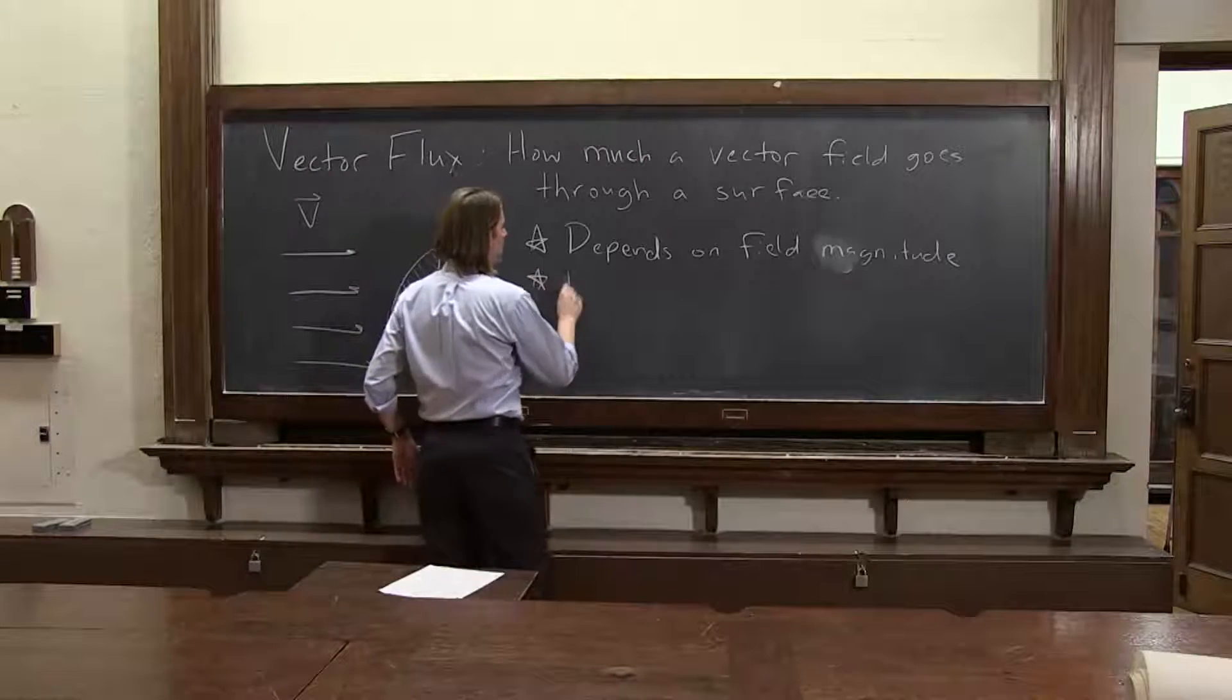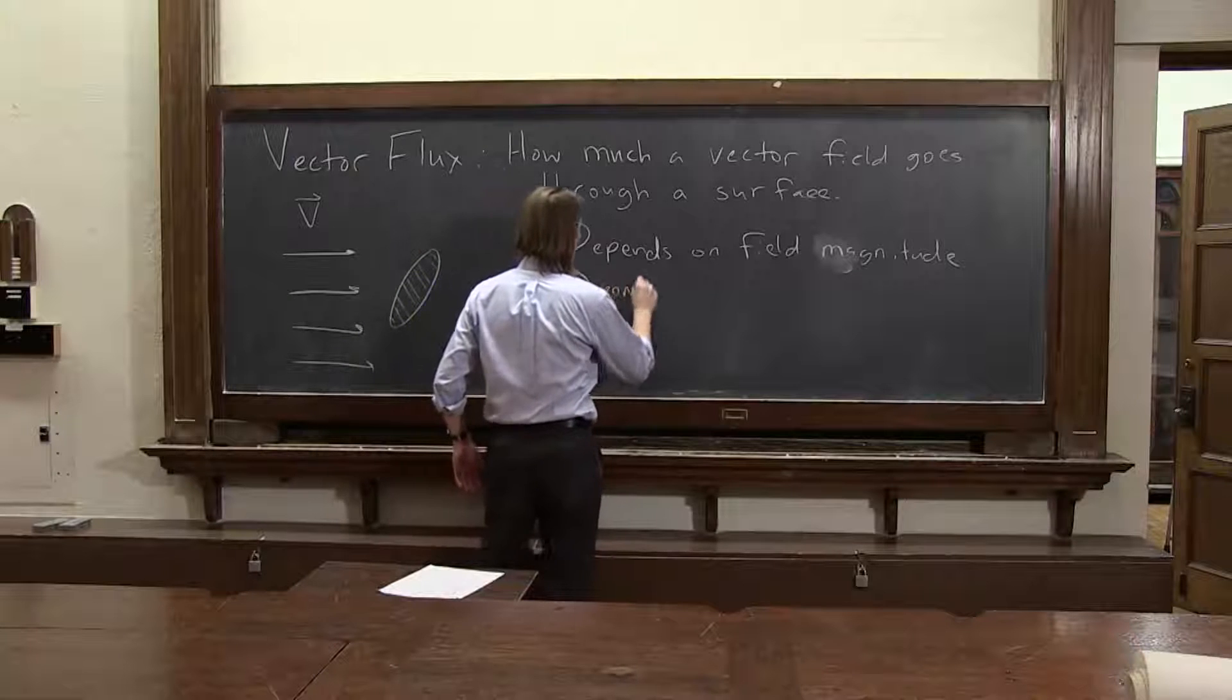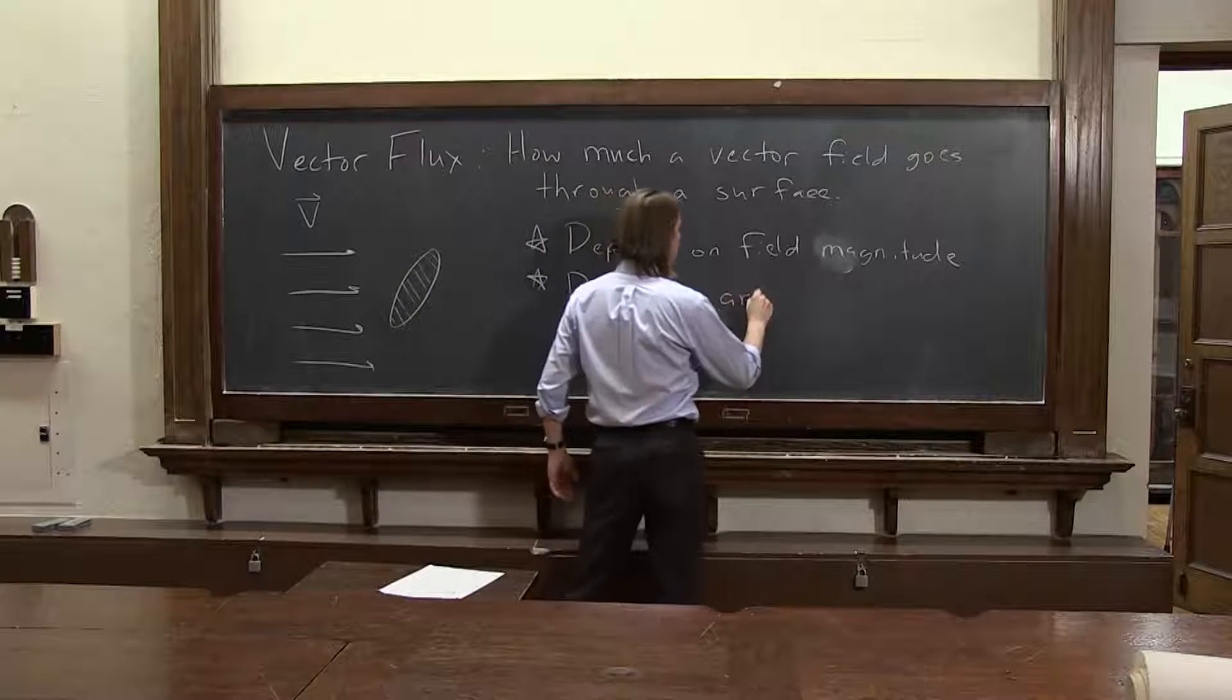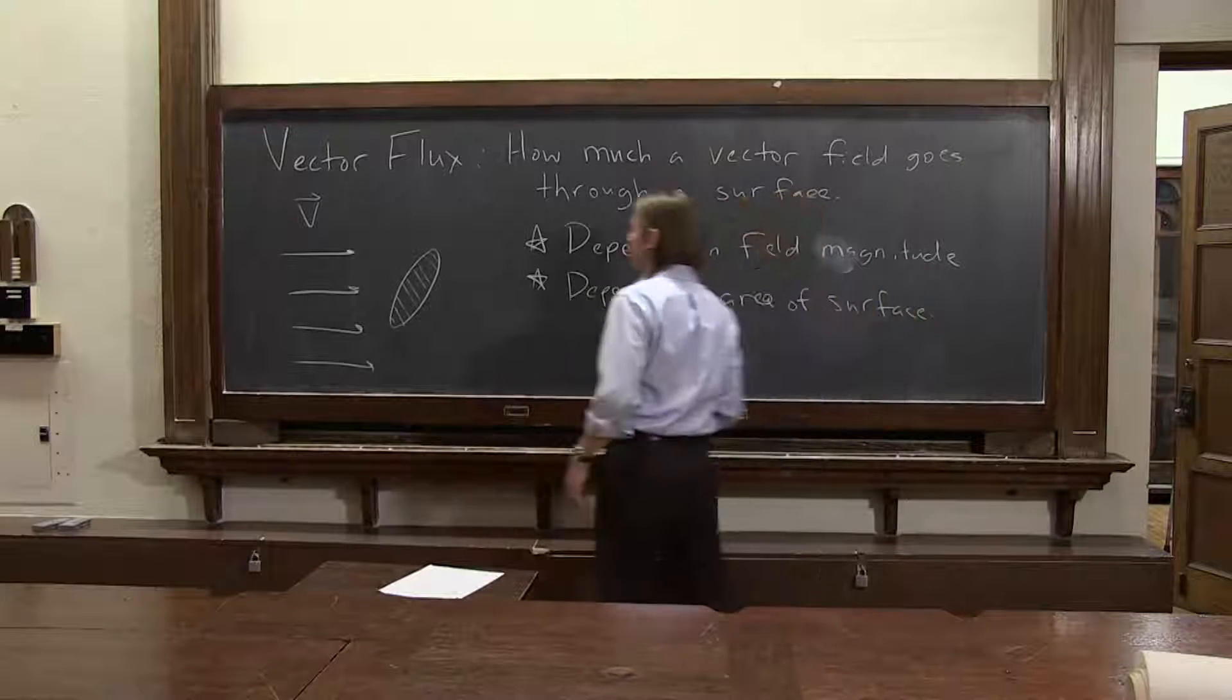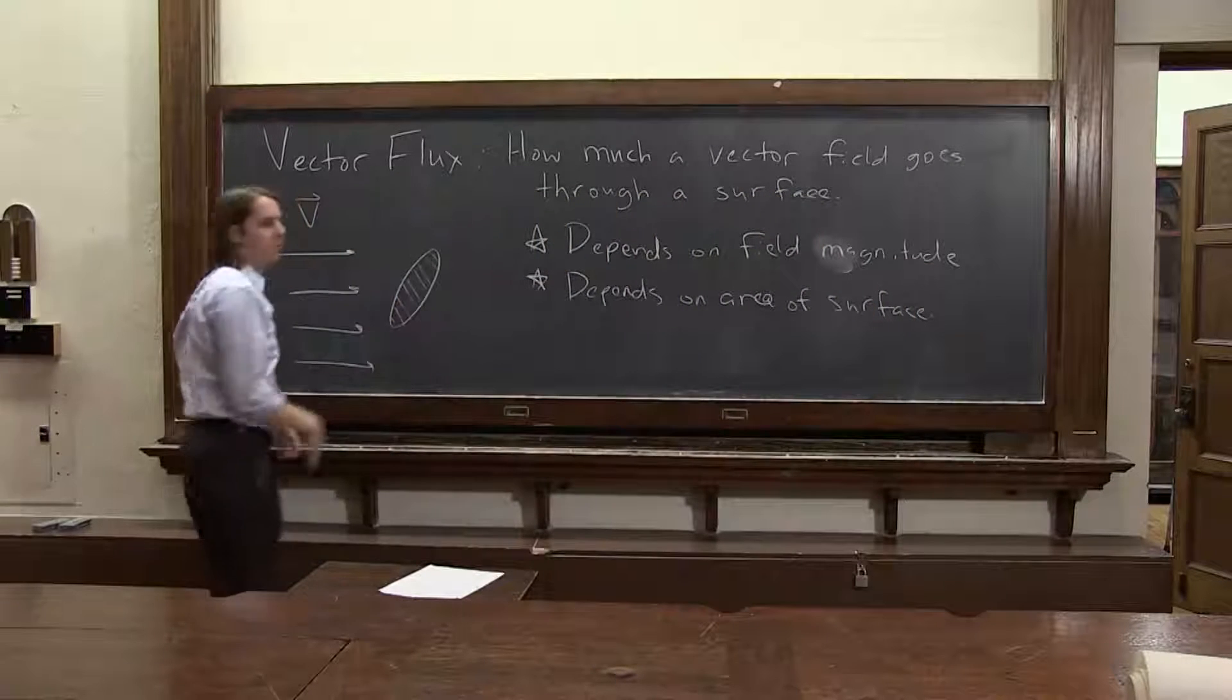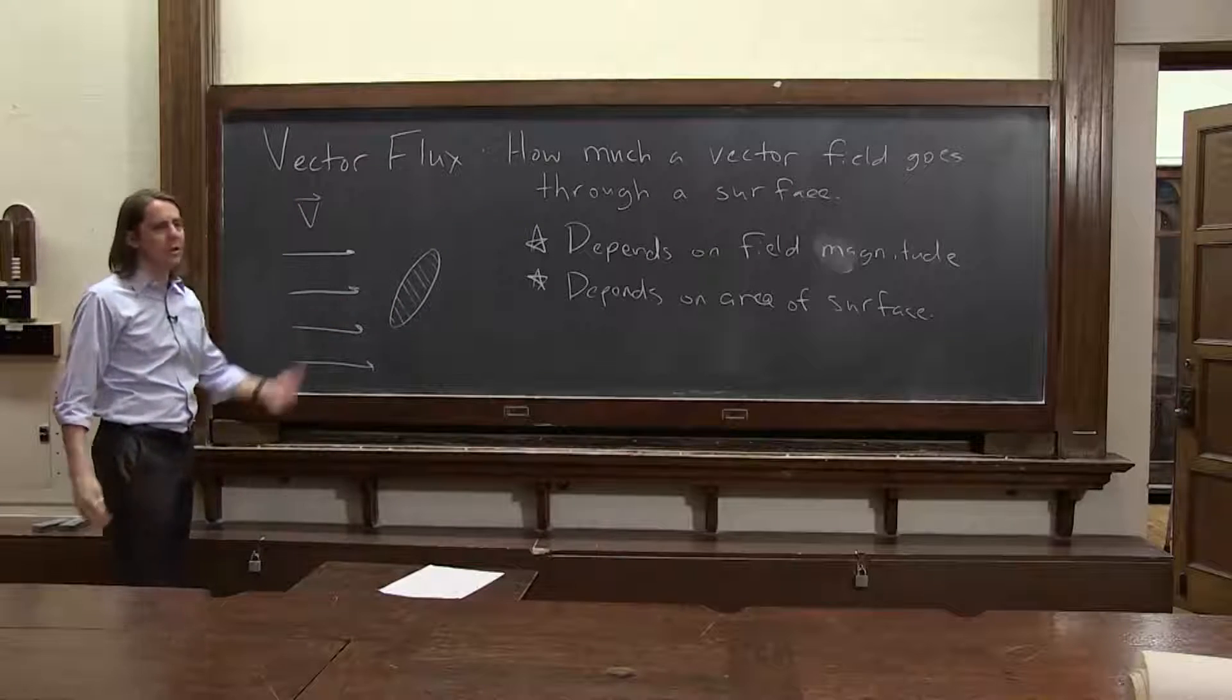It depends on the area of the surface, and that also seems to make sense. Big area, more fields are going to get through. A little area, less fields are going to get through.